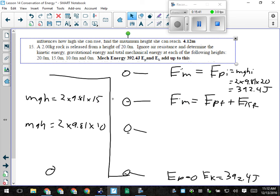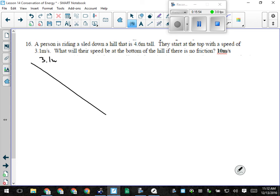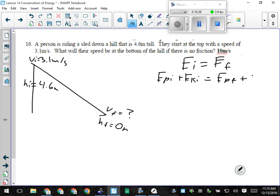OK. For this sledding question, OK? So we've got a person riding a sled down a hill that's 4.6 meters tall, so it's not a very high hill, OK? They start at the top with a speed of 3.1 meters per second. So that'll be VI, OK? Our initial height is 4.6 meters. They're wanting to know what will their speed be at the bottom of the hill. What's my final height? OK. Is the mechanical energy at the top of the hill the same as it is at the bottom? Yes, it is. Alright. So at the top, I'll have some potential energy and some kinetic energy. And at the bottom, I'll only have what? I only have kinetic because if H is 0, the potential energy is 0. Alright. Now I can put in my formulas.